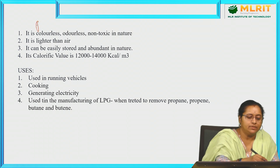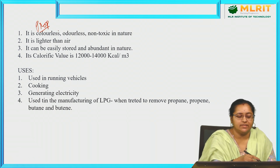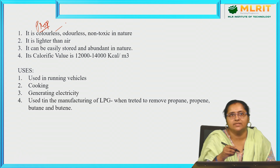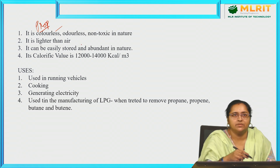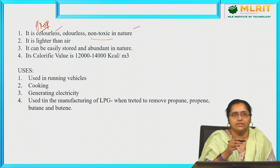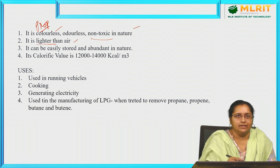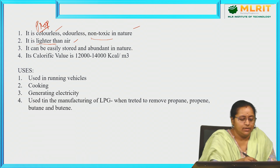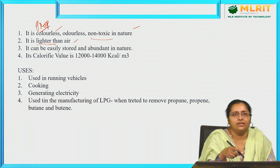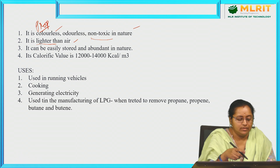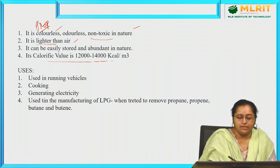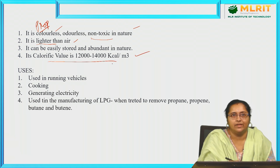Let us go with its properties. Natural gas is colourless — it does not possess any kind of colour. At the same time, it is odourless — no smell. It is non-toxic in nature, meaning it is not poisonous. It is lighter than air. It can be easily stored and is available abundantly in nature. It possesses a very high calorific value of 12,000 to 14,000 kilocalories per cubic meter.